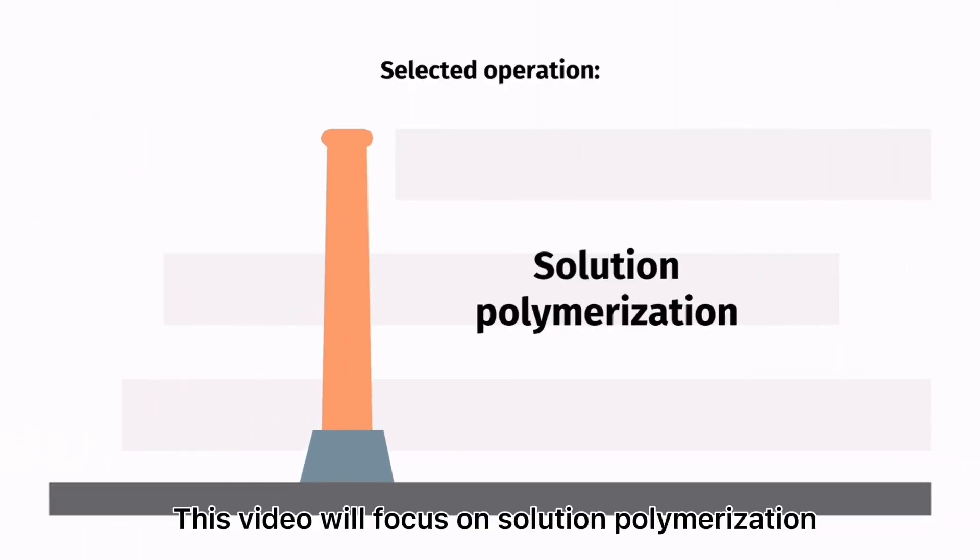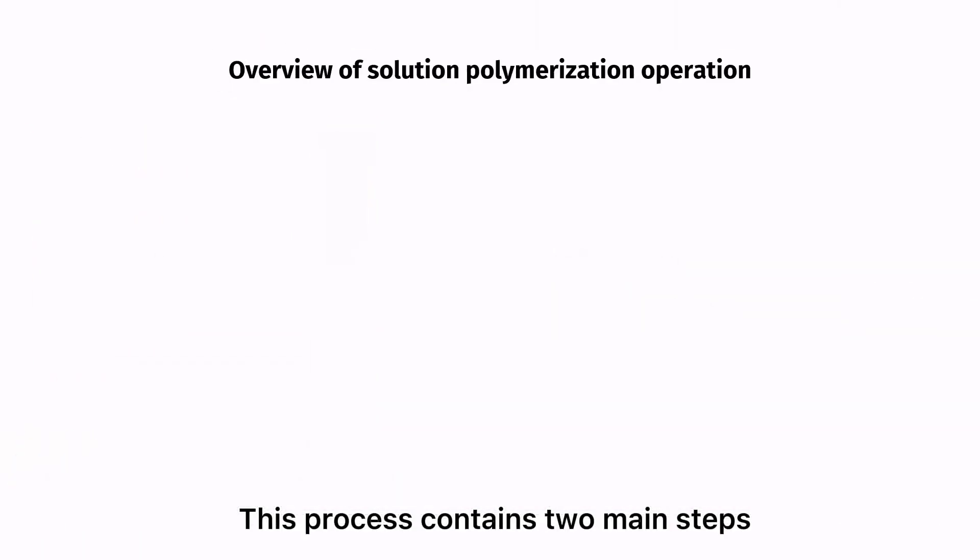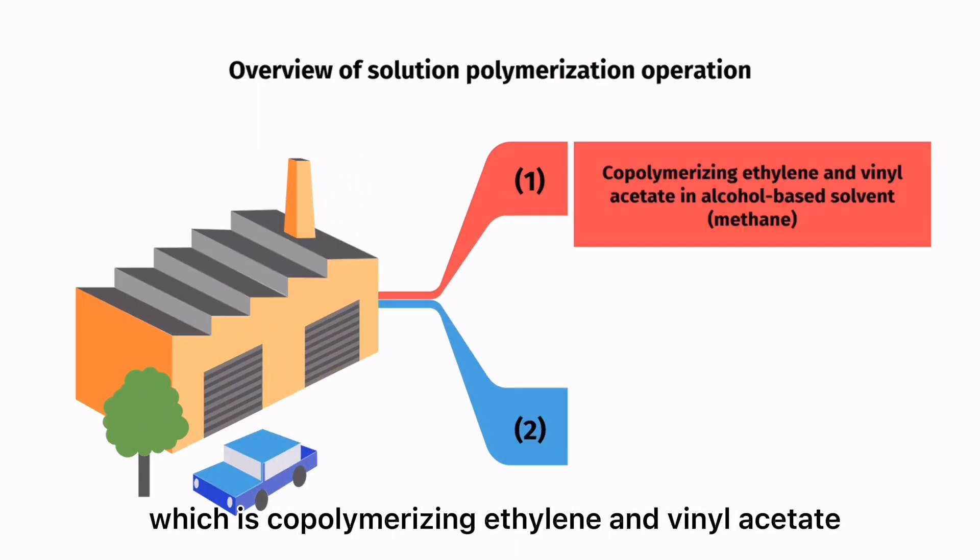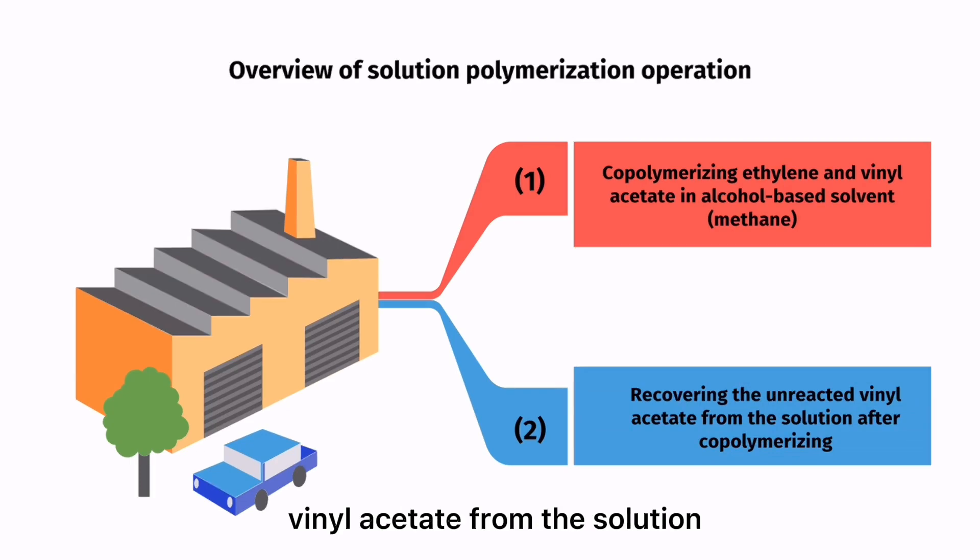This video will focus on solution polymerization. This process contains two main steps: copolymerizing ethylene and vinyl acetate in an alcohol-based solvent, and recovering unreacted vinyl acetate from the solution after copolymerizing.